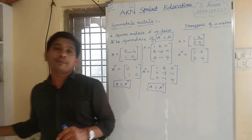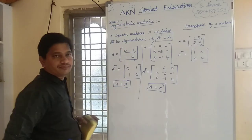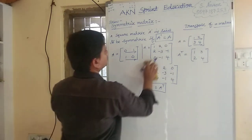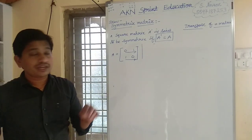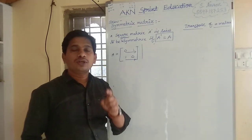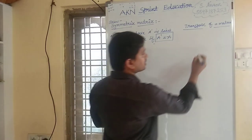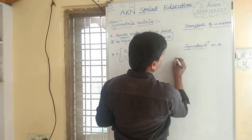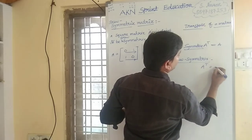Now let us see what do you mean by skew symmetric matrix. A square matrix A is said to be skew symmetric if A transpose is equal to minus A. Symmetric means A transpose equals A. Skew symmetric means A transpose equals minus A.